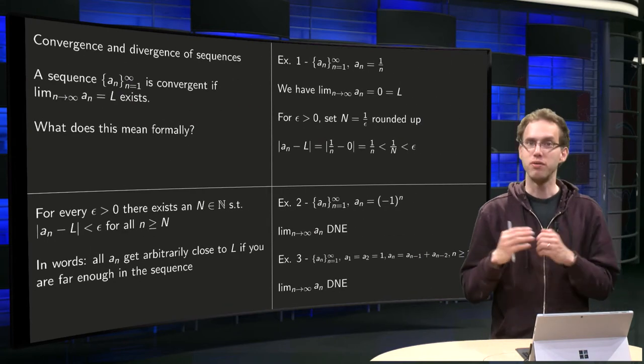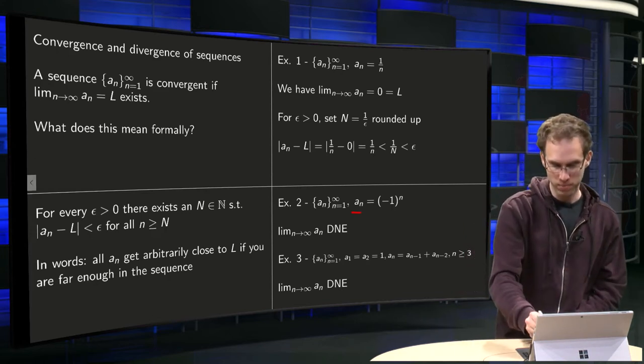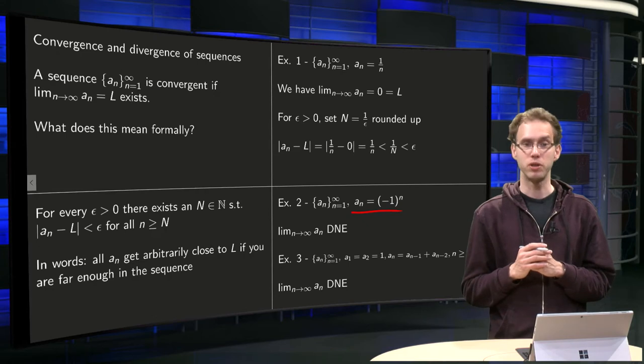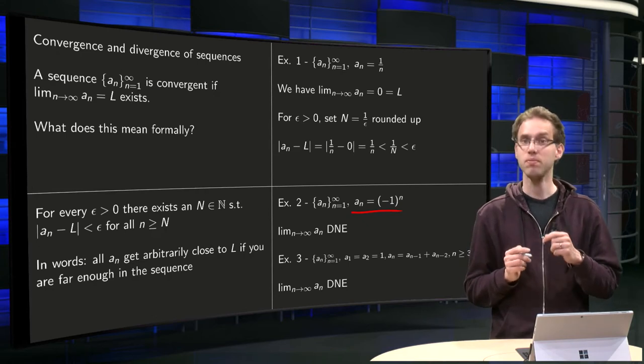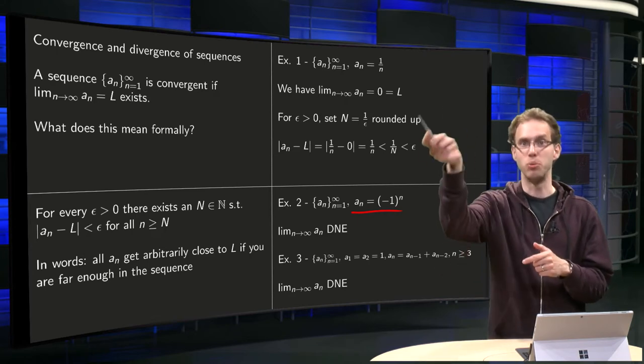So let's take a look at a few examples where the limit does not exist. Easy sequence is a_n = (-1)^n. What's happening? It starts at -1, then jumps to 1, then to -1, then to 1, then to -1, then to 1.